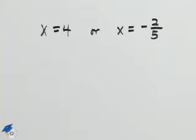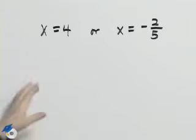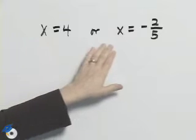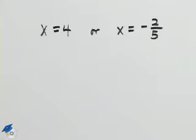We want to write an equation that has x-intercepts of 4 and negative 2 fifths, so I'll set x equal to 4 and x equal to negative 2 fifths.